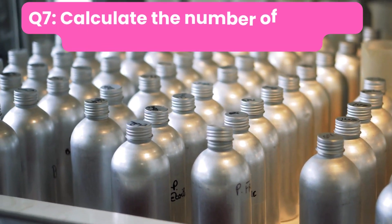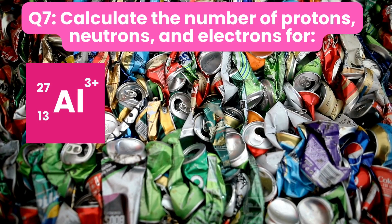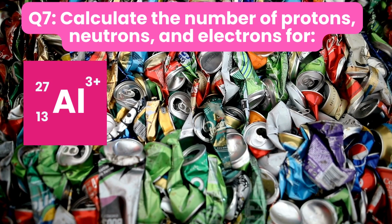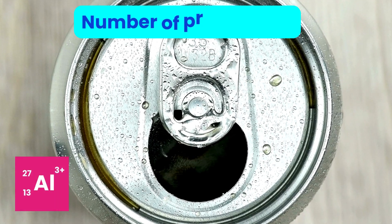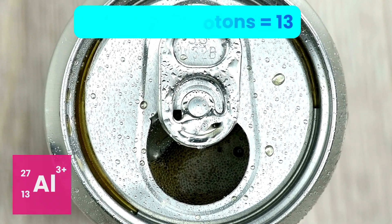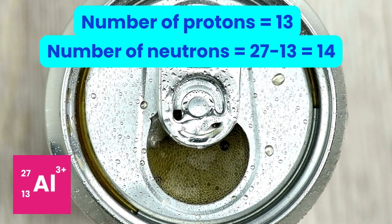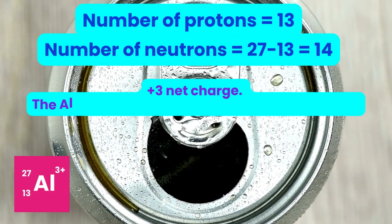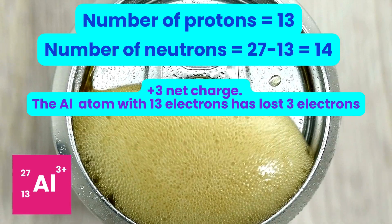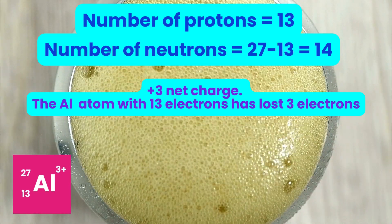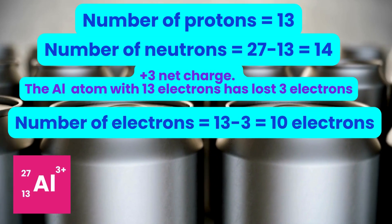Question 7: Calculate the number of protons, neutrons and electrons for aluminum with subscript 13, superscript 27, and net charge 3+. Number of protons is 13 since atomic number is 13. Number of neutrons is mass number 27 minus 13, which equals 14. The net charge is 3+, meaning three electrons have been lost. So the number of electrons for the aluminum ion is 13 minus 3, which equals 10 electrons.